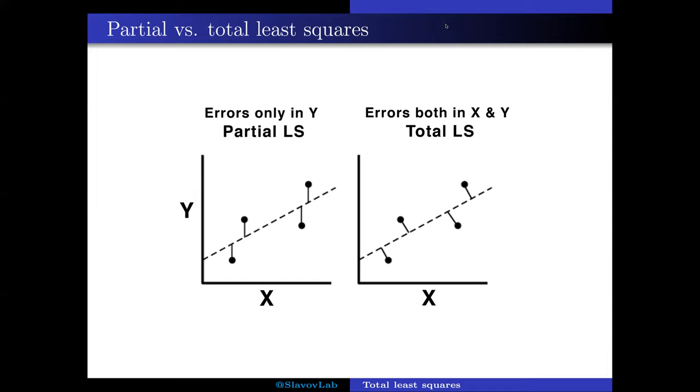It is partial because it accounts only for the errors in Y, which is usually the dependent variable, and doesn't account for the errors in X, the independent variable.